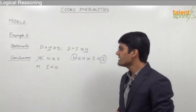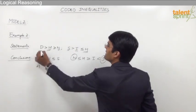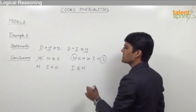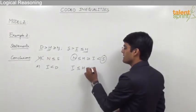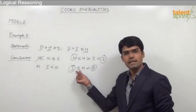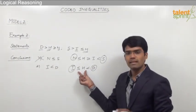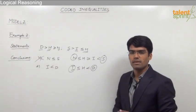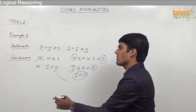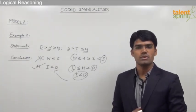Conclusion number 1 is false. Now let us look at conclusion 2: i < d. Connecting i and d via h: i ≤ h and h < d. Comparing i and d, we have inequalities ≤ and <. The common relationship between them is less than, so i < d — which is exactly conclusion number 2. So conclusion 2 is true, and the answer is only conclusion 2 is true.